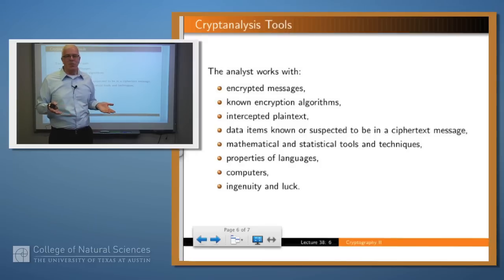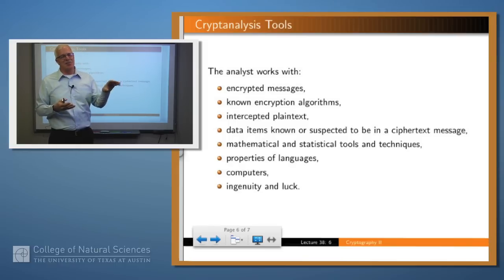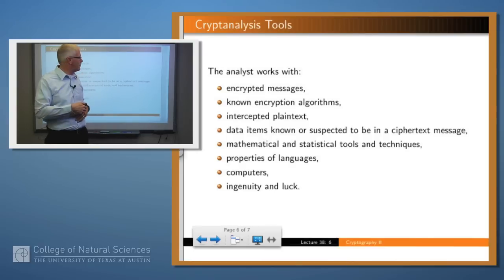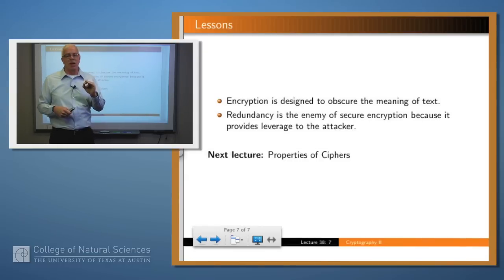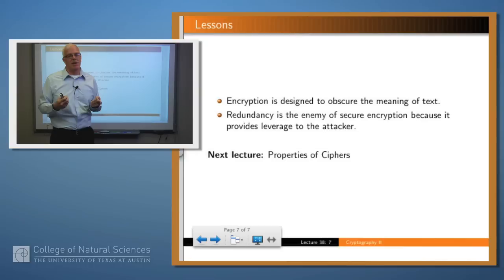It may have known data items in the ciphertext — for example, if it's a diplomatic cable, it may have a standard heading always on top, so you can use that to figure out that it probably says something like 'to his majesty so-and-so.' Other tools include mathematical and statistical techniques, properties of languages such as the frequency of symbols in English or another language, computers, ingenuity, and luck. Encryption is designed to obscure the meaning of texts, and any redundancy or regularity of the text that's preserved in the ciphertext can be used as a weapon by the attacker to figure out what the message is saying.